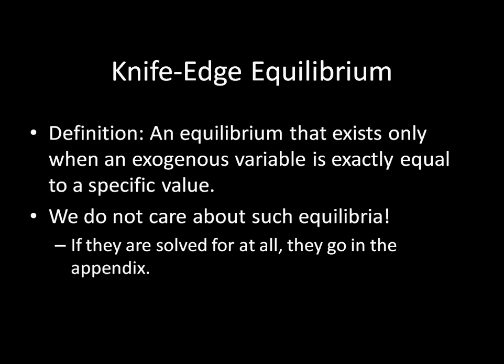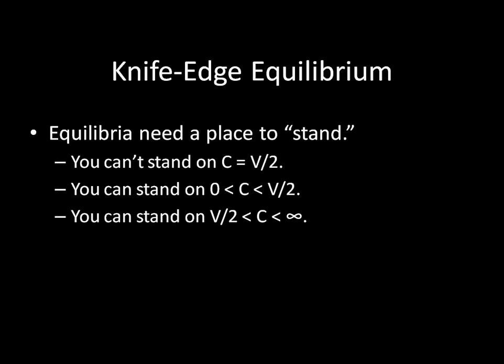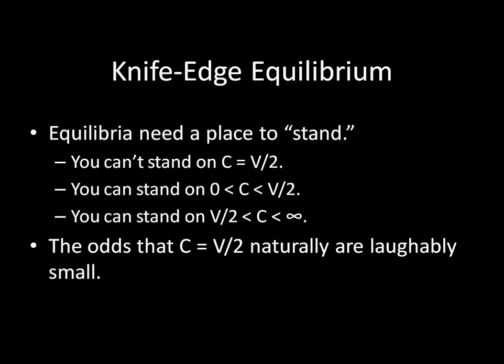Why does it not matter that much? Essentially, equilibria need a place to stand. You can't stand on C equal to exactly V over 2 — that's just a single point. There is, however, depth to C being between 0 and V over 2, and depth to C being between V over 2 and infinity. There's no depth to this case. Essentially, you're looking at a knife placed with the blade pointing upward, and you're trying to stand on that knife. If you were to try to stand on that knife, you would just slice right through your foot because it's just so thin. You can't reliably place your finding off of that one particular case because, in the real world, will C be exactly equal to V over 2? The odds of that are laughably small, if not zero.